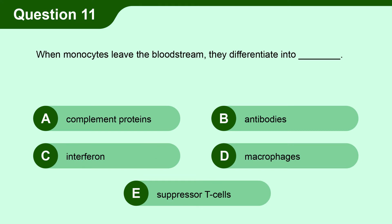Question 11. When monocytes leave the bloodstream they differentiate into blank. A. Complement proteins. B. Antibodies. C. Interferon. D. Macrophages. E. Suppressor T-cells.